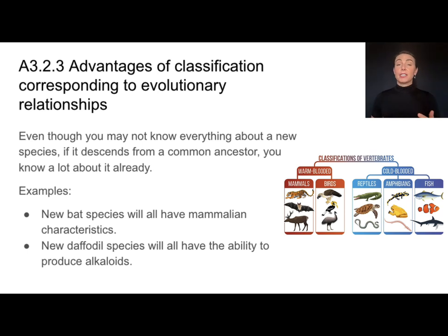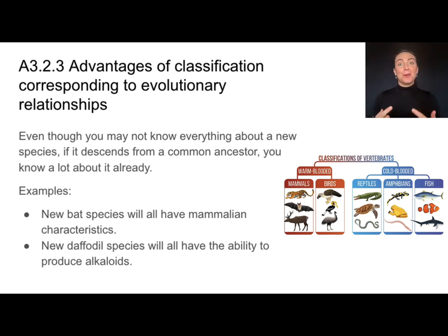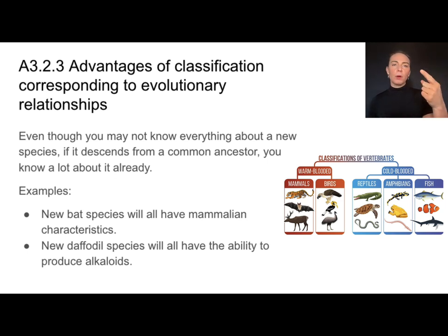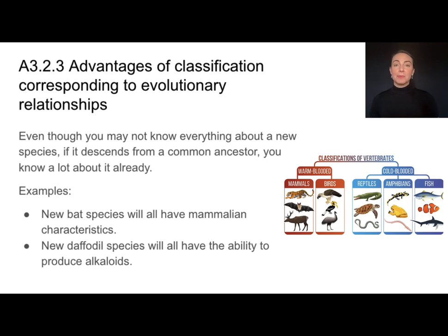One big advantage of classifying organisms this way is that if you know something belongs to a group from a common ancestor, you already know a lot about it. For example, if I find a new species of bat, I know it is classified in the group of mammals that descended from a common ancestor — so I already know it will be warm blooded, produce milk, and have all other mammalian characteristics.